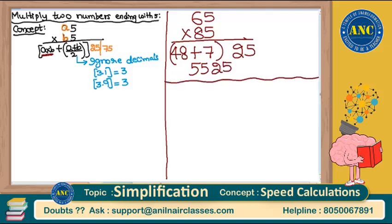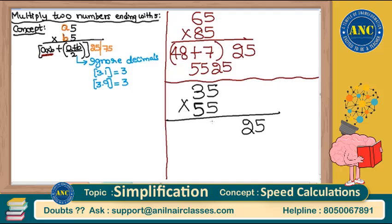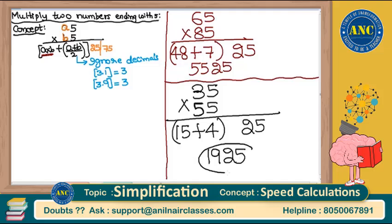Very easily you can solve all these questions if you know the concept. Example two: 35 × 55. Both odd, so last two digits are 25. A is 3, b is 5: 3×5 = 15, plus (3+5)/2 = 8/2 = 4. So 15 + 4 = 19. Answer is 1925.